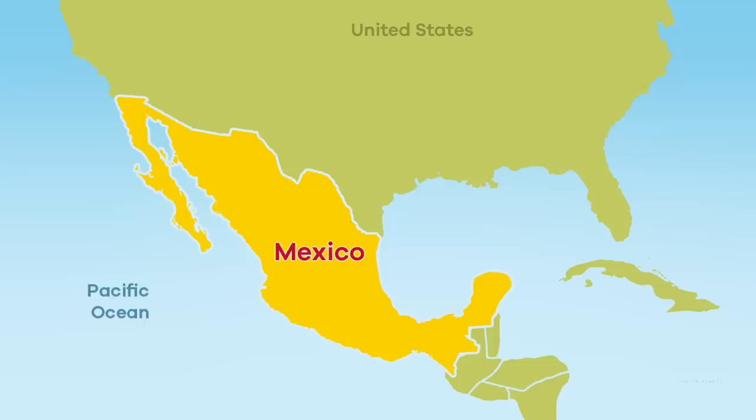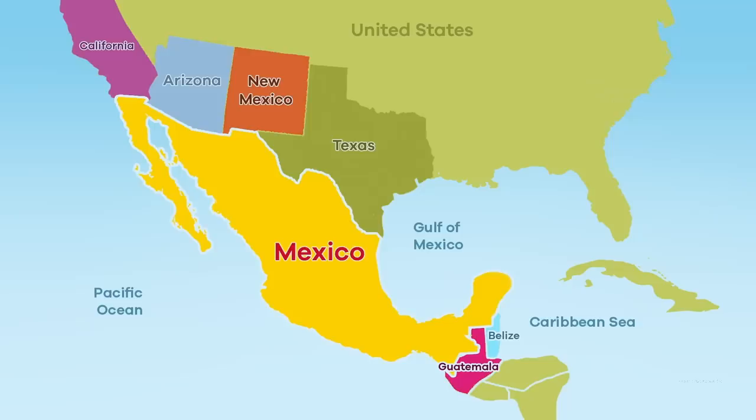The country is bordered by the Pacific Ocean to the west and south, the Gulf of Mexico to the east, and the Caribbean Sea, Guatemala, and Belize to the southeast. In the north, Mexico borders the American states of California, Arizona, New Mexico, and Texas.